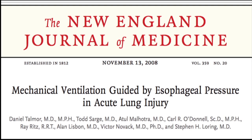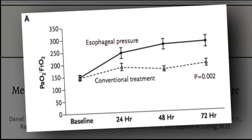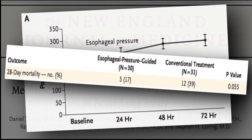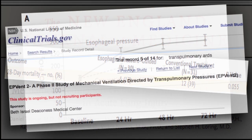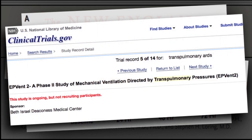Esophageal balloon guided PEEP titration has been shown to provide a benefit in oxygenation as well as a signal for reduction of mortality. Results of a larger EP-VENT2 trial powered to review outcomes should become available sometime in 2018.